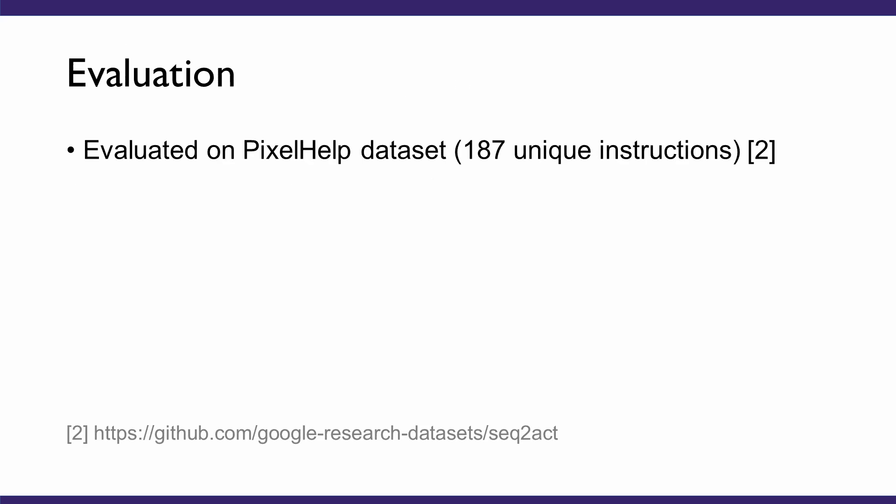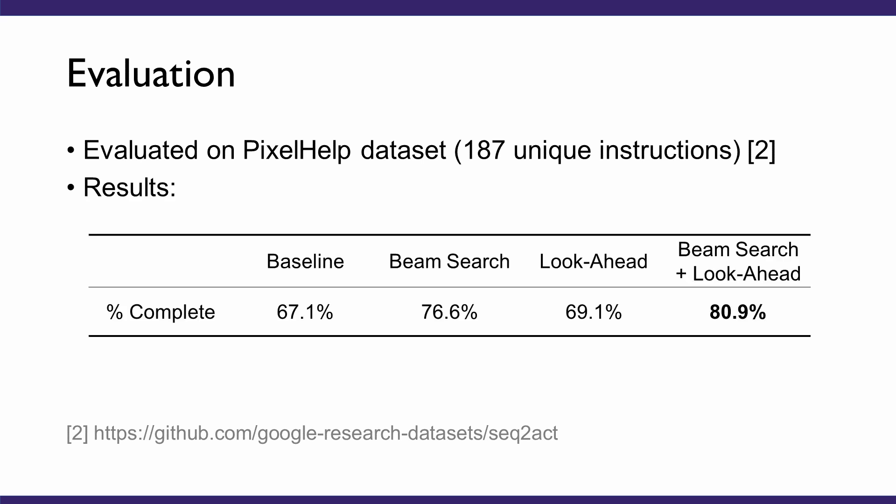We conducted experiments to evaluate the performance of the HelpBiz pipeline. We used the Pixel Help dataset, which contained 187 text instructions for using the Android Pixel phones. We compared four configurations of the pipeline: BeamSearch only, Lookahead only, BeamSearch with Lookahead, and the baseline condition that uses neither BeamSearch nor Lookahead. We looked at the percentage of actions that each pipeline configuration could complete. Results show that by adopting both BeamSearch and Lookahead, the pipeline achieved substantial improvement over the baseline condition.